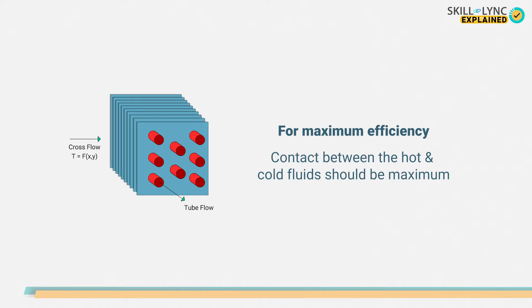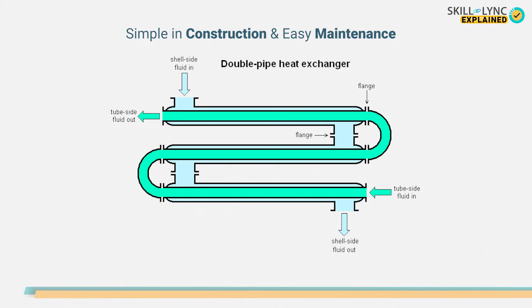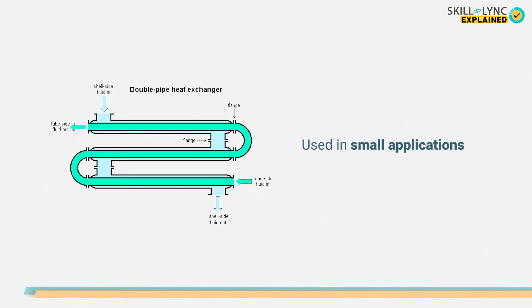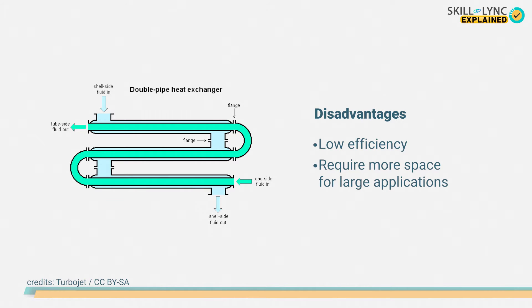To maximize the efficiency of heat exchangers, the contact between the hot and cold fluids should be maximum. For this, heat exchangers are designed to have large surface areas. The double pipe heat exchangers that we discussed are easy in construction and maintenance. For this reason, they can be used for small scale applications, but they have low efficiency and take up a lot of space.